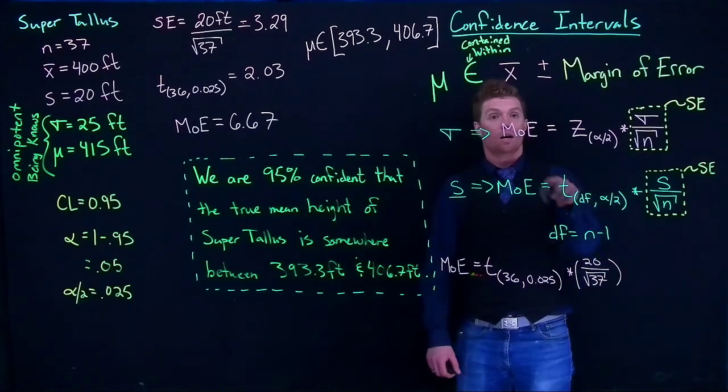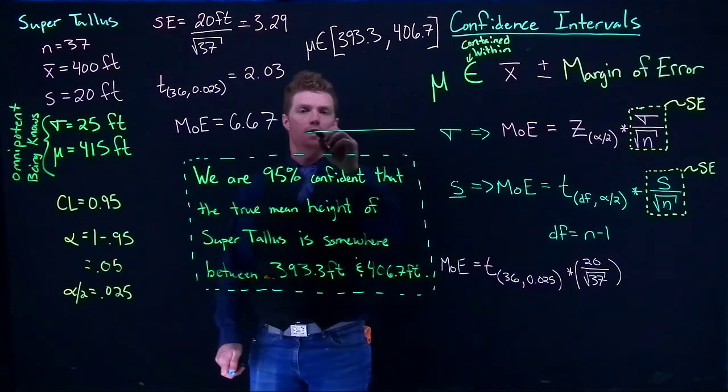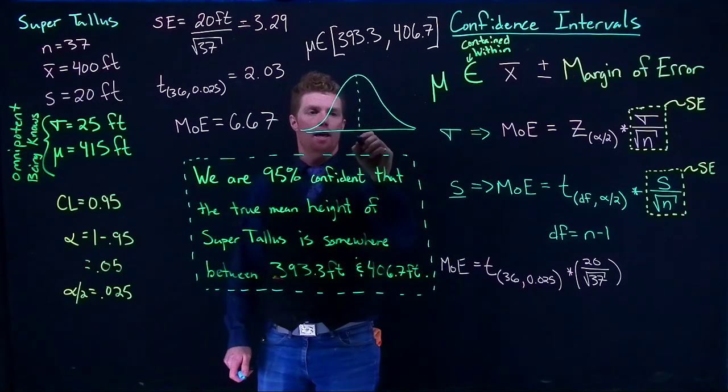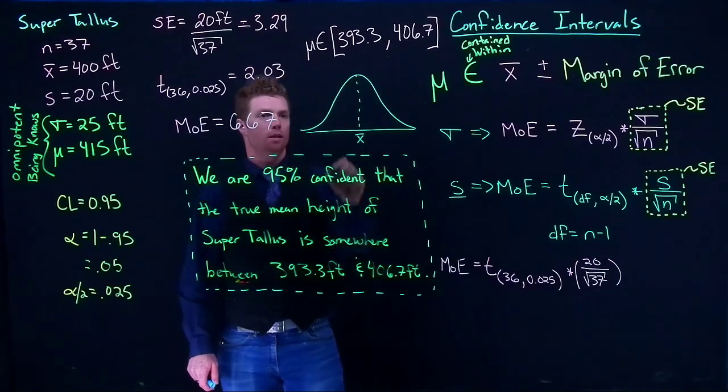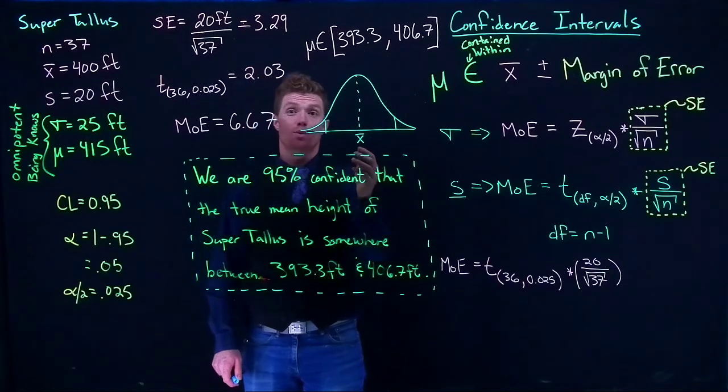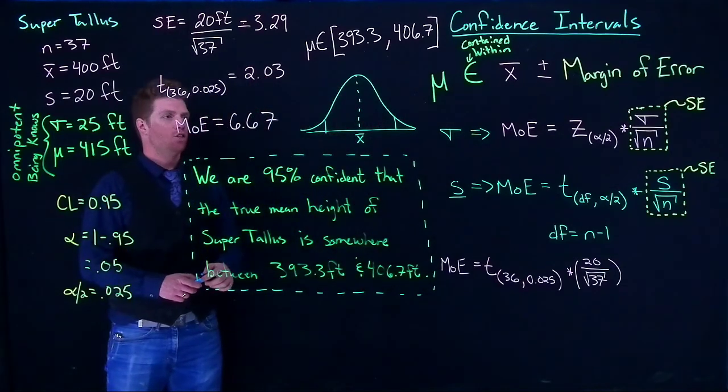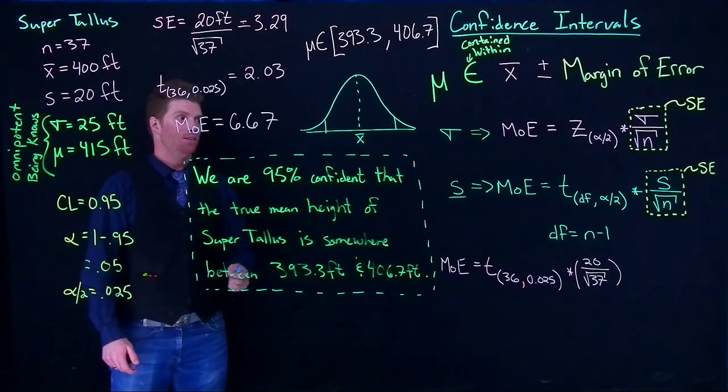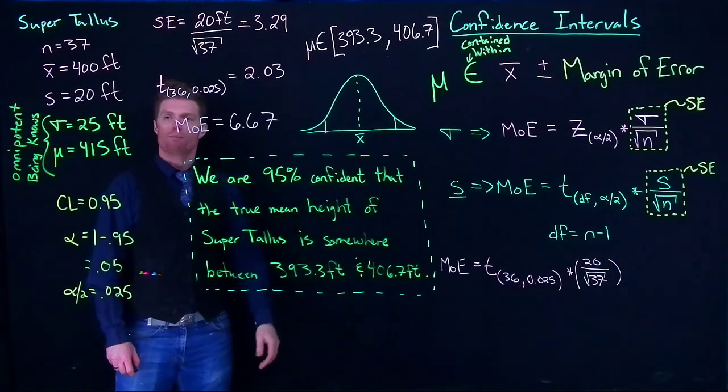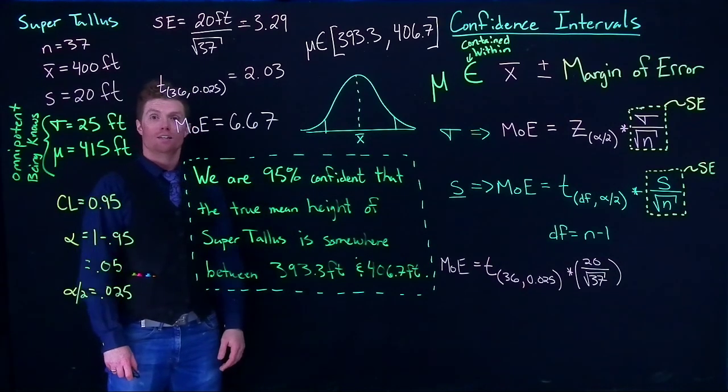So we can also talk about, what we've done right now is we've done what are called these two-tail confidence intervals, where we start at our point estimate and we go up and down a certain value. But what if we threw all of that error to one side? We can totally do that. Let's just call it a one-tailed confidence interval. And we can do that with both methods if we know what the population standard deviation is or if we only know what the sample standard deviation is.